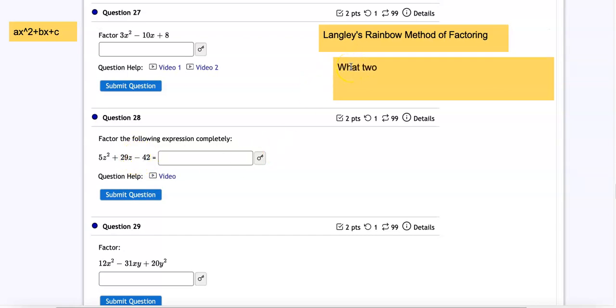Here are the two options. What two factors of ac, that is a times c, either add up to, and that's in the case of a plus sign, or differ by, that's in the case of a minus sign, the absolute value of b. So in this particular problem we have what two factors of three times eight, what two factors of 24, add up to the absolute value of negative 10. So what two factors of 24 add up to 10?